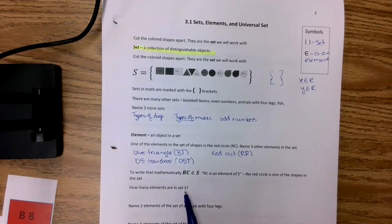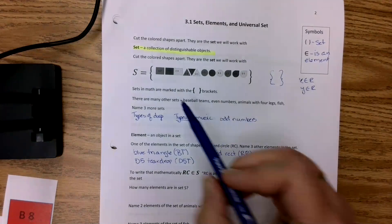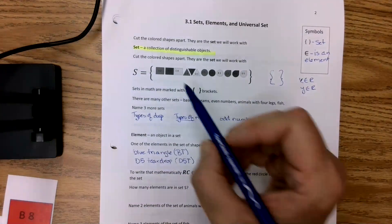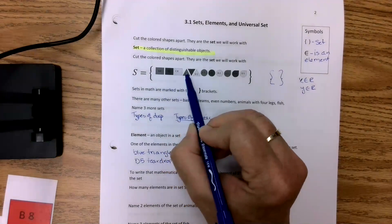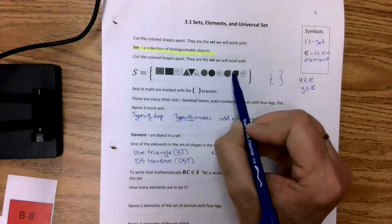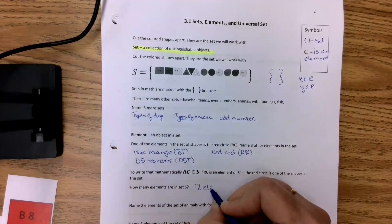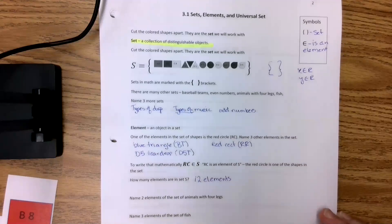All right. How many elements are there in set S? Well, here's my set up here. Rather than counting these because I cut them apart now, it's easier. One, two, three, four, five, six, seven, eight, nine, ten, eleven, twelve. There are twelve elements.